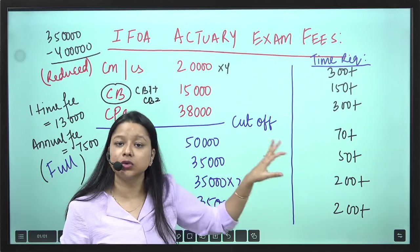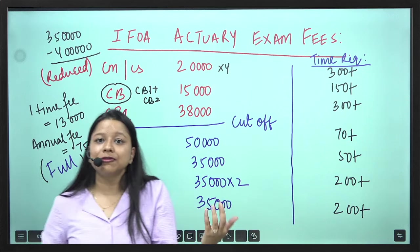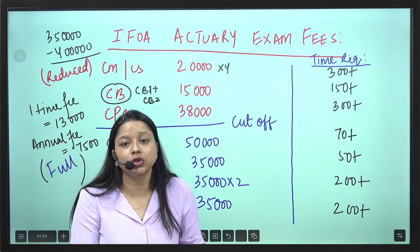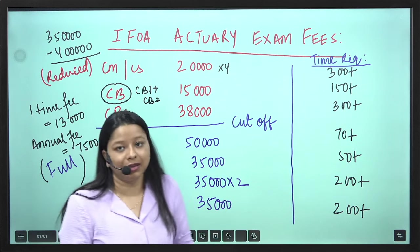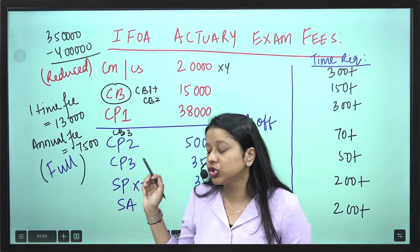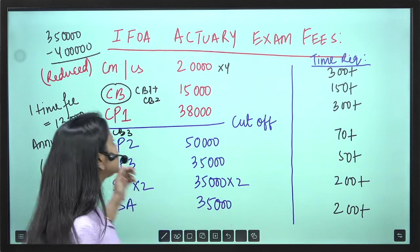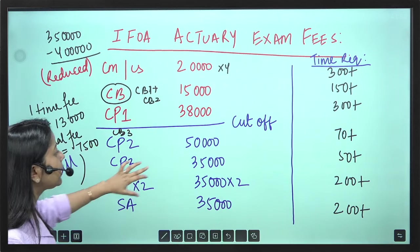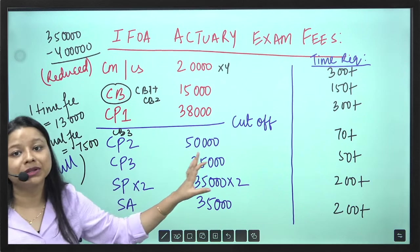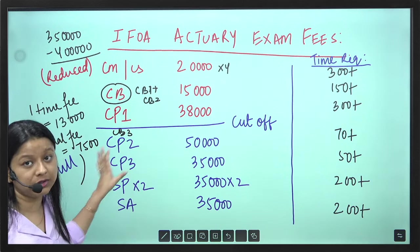This is in your reduced rate. Now once you have completed your graduation and you are in your job, then you will not be any more eligible for the reduced rate and then you will have to pay a full fees. So for full fees, we have taken CP2, CP3. CP2 costs approximately Rs 50,000. This is the full rate. This is not the reduced rate.